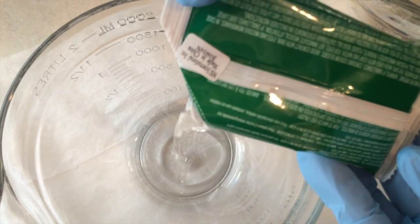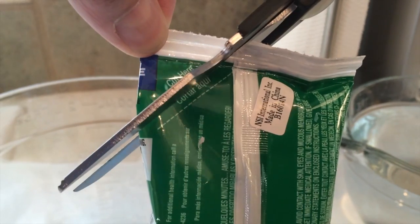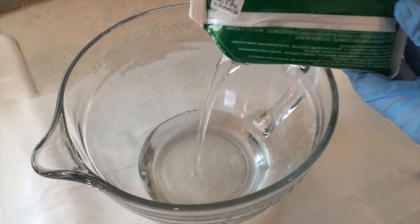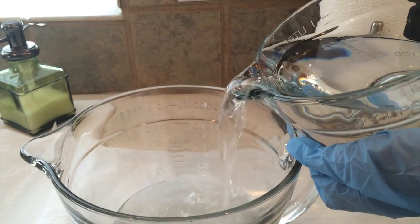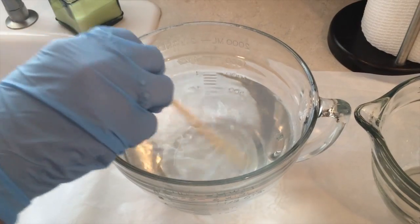Pour the two packets of sodium silicate into a bowl, but it is bad for your eyes, your skin, and your furniture, so do be careful. Add the water to the sodium silicate and stir thoroughly.